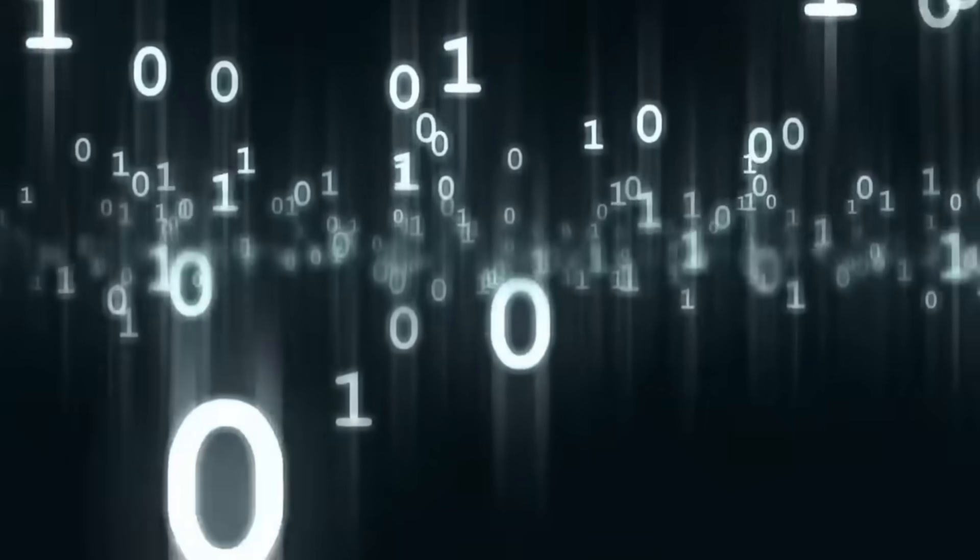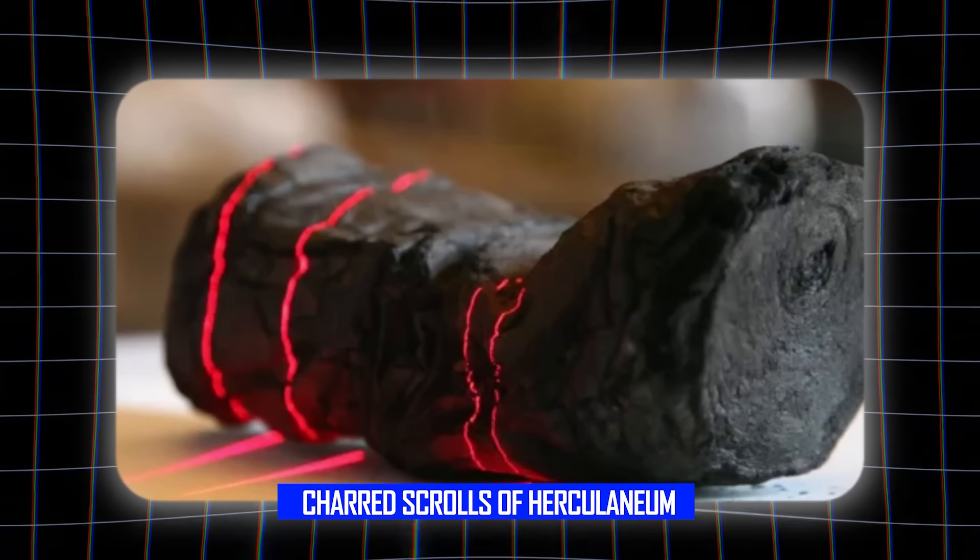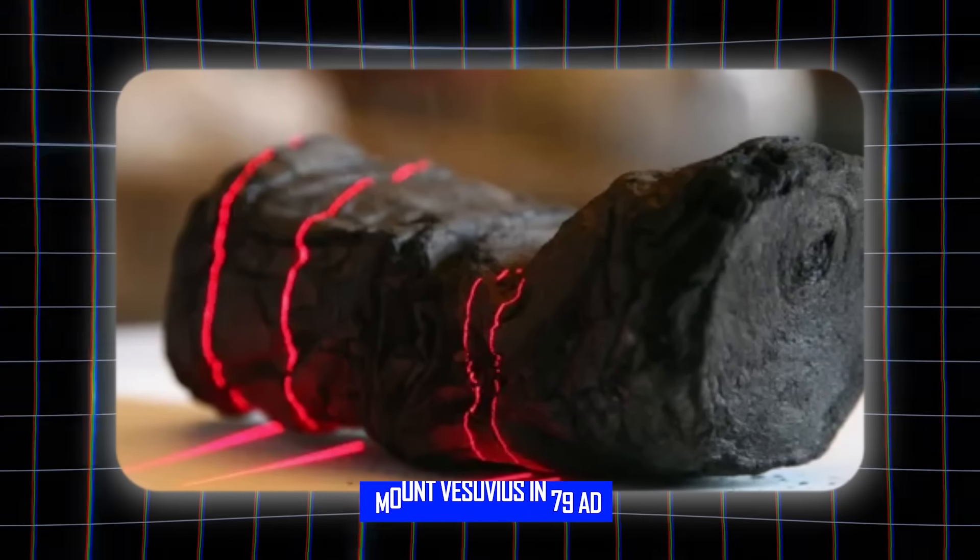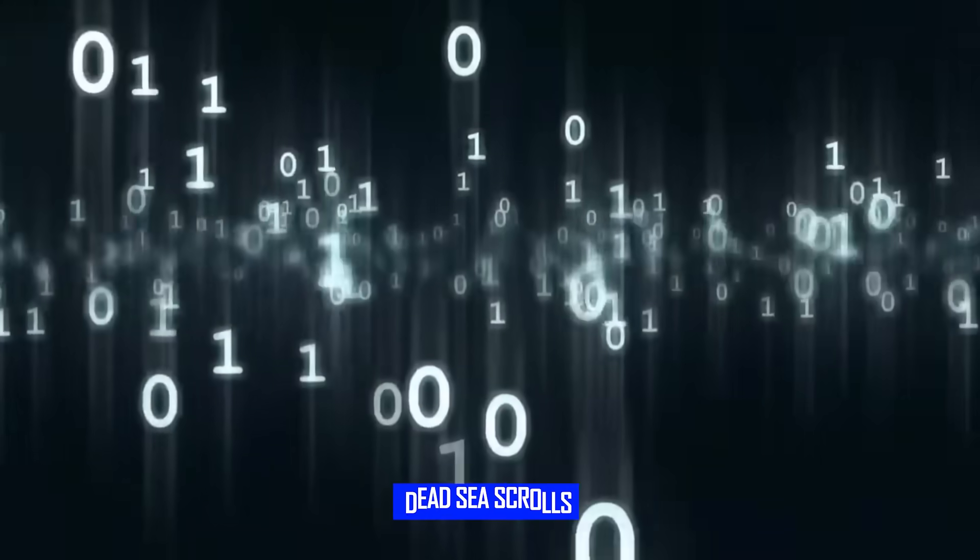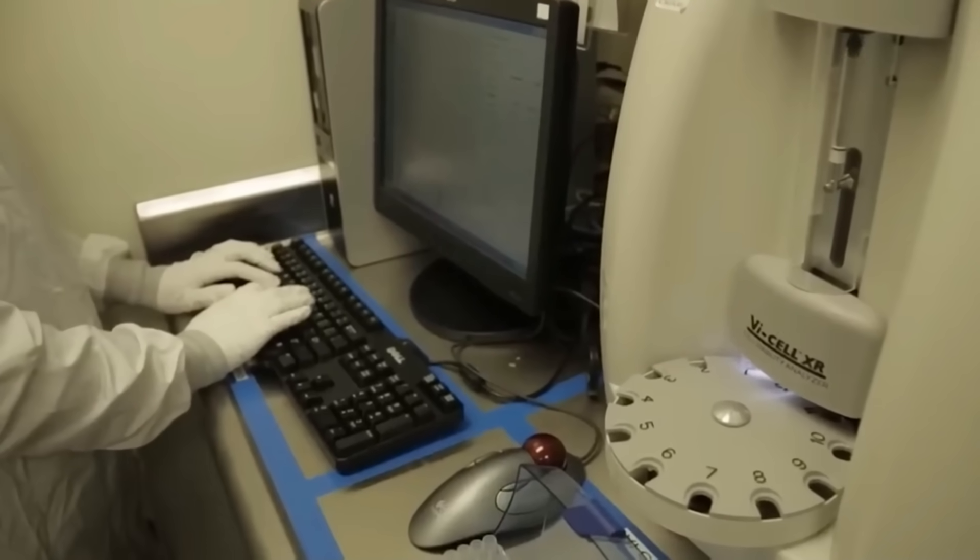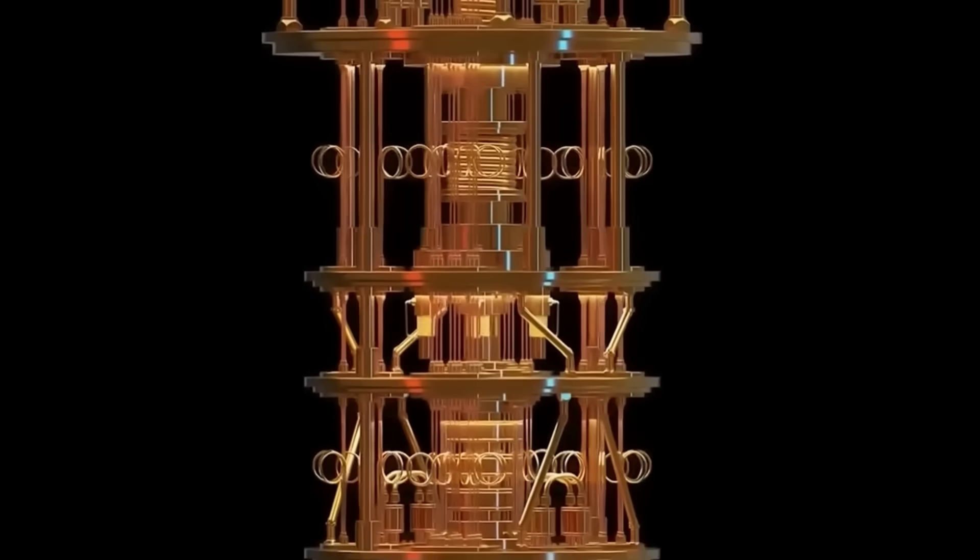But the Omega Code has another side. One that might resurrect lost knowledge rather than expose secrets. Quantum pattern recognition could finally decode texts that have remained mysteries for millennia. The charred scrolls of Herculaneum buried by Mount Vesuvius in 79 AD. The remaining undeciphered Dead Sea Scrolls. The same technology that threatens to end privacy could also end historical ignorance.